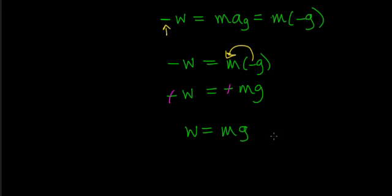On Earth, the acceleration due to gravity is 9.8 meters per second per second. On another planet — for example the moon — the force of gravity is significantly less, so the weight of an object would be much less. The weight of an object depends on the gravitational force of attraction, which influences the rate at which an object is accelerated.